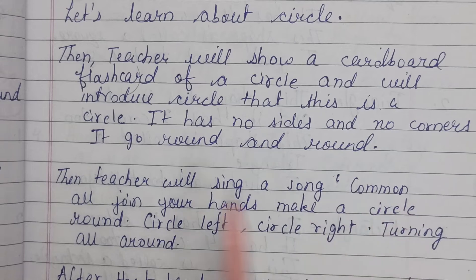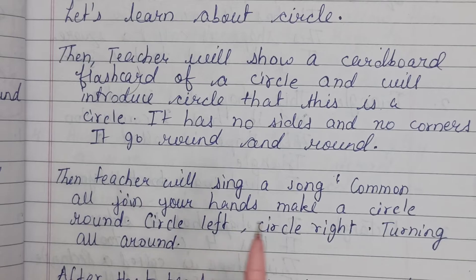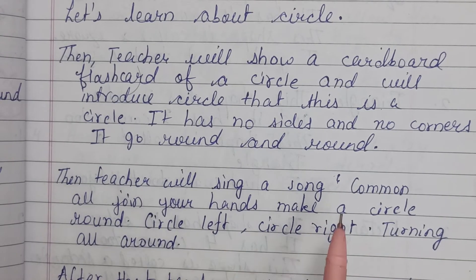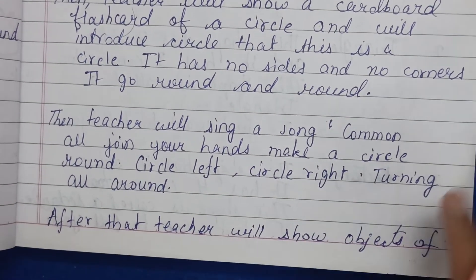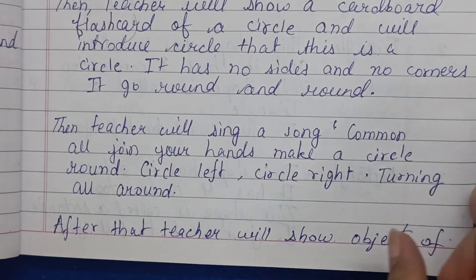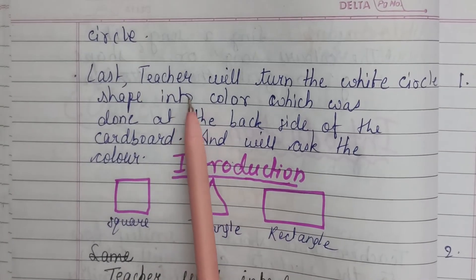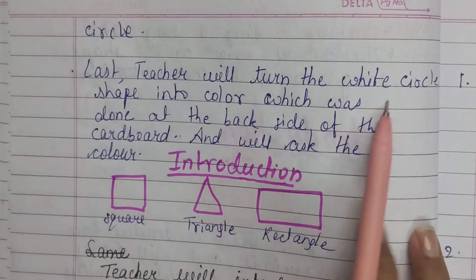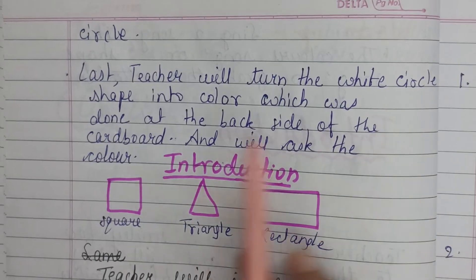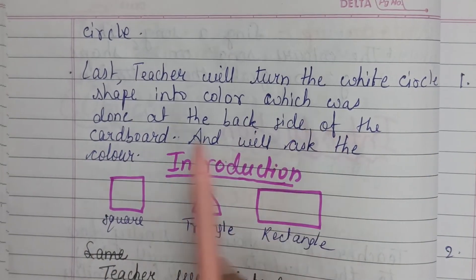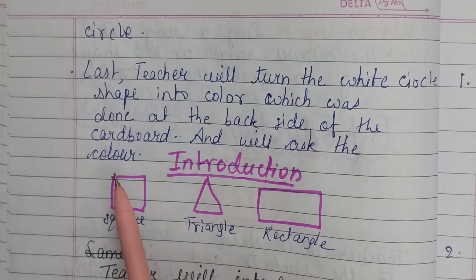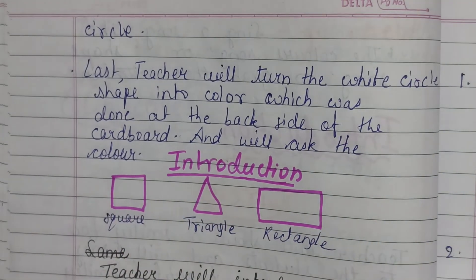After that, you will sing a song: 'Come on all, join your hands, make a circle round — circle left, circle right, turning all around.' You can sing this song along with actions. After that, the teacher will show objects of that shape, then turn the white-color shape card over to reveal the colored side on the back of the cardboard, and ask the students what color it is.